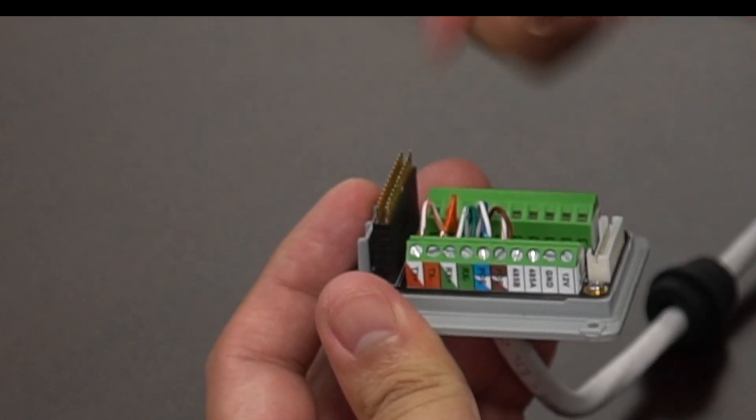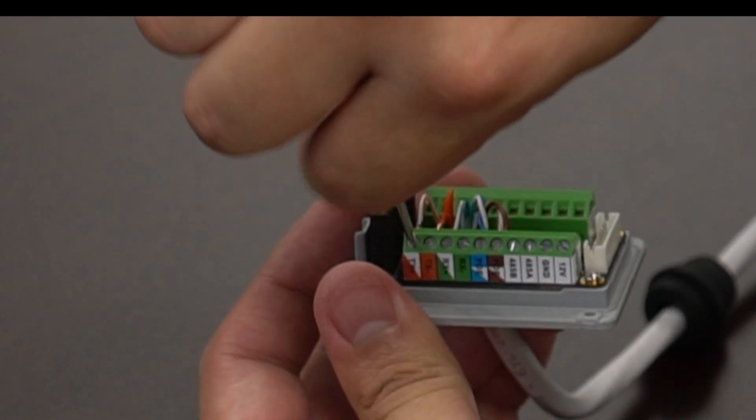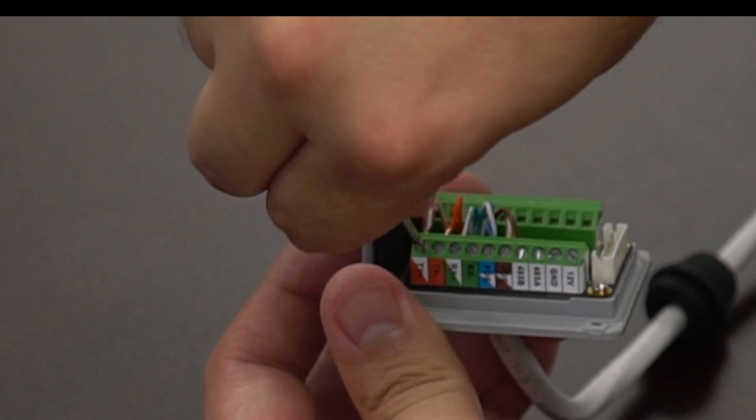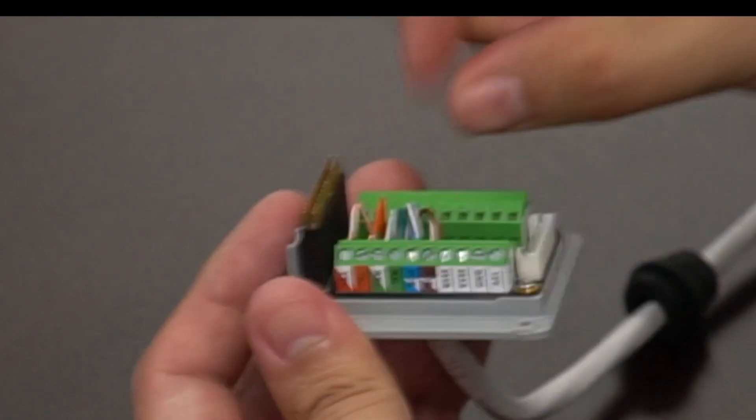And after you tighten everything up, you might want to go ahead and pull on those wires and check to make sure that none of them are loose or falsely contacting that punch block.